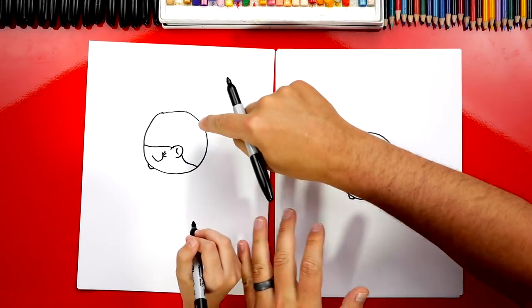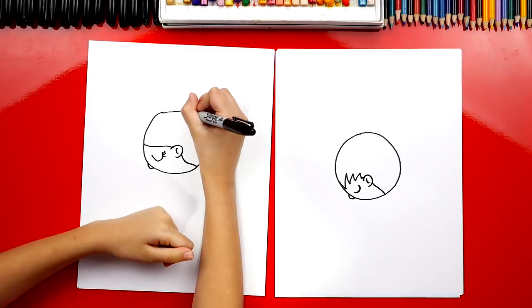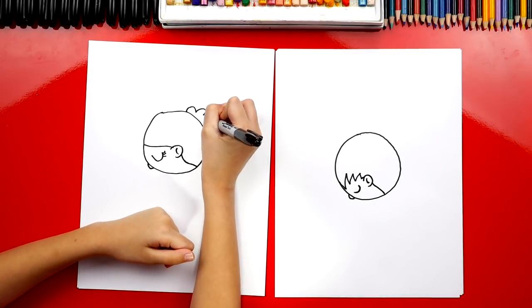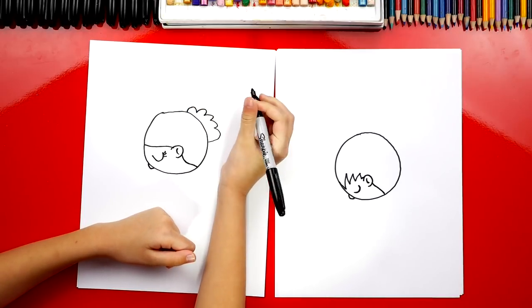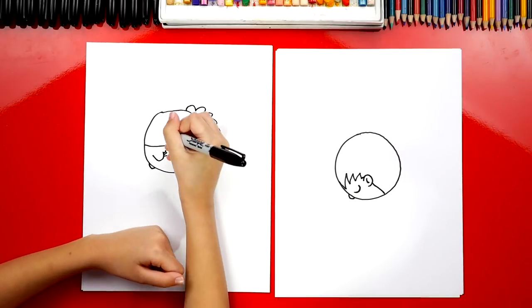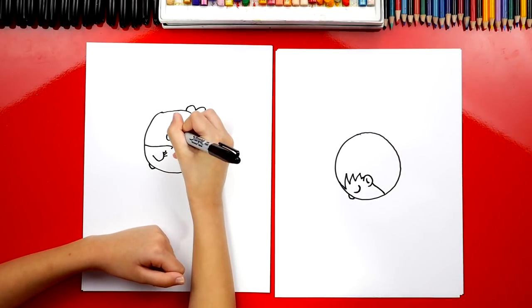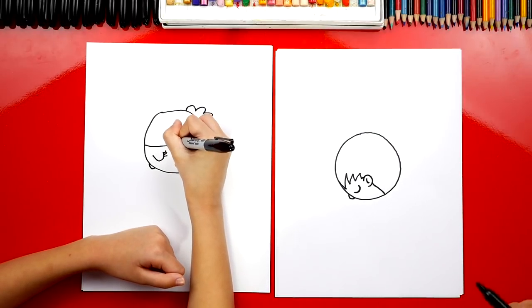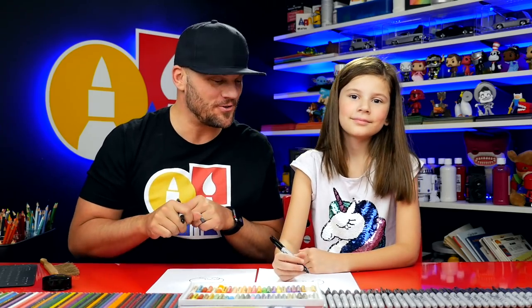Now up here, you could also draw a bumpy line. Maybe her hair is in a ponytail or a bun. Oh, cute. That's awesome. You could also add a little flower in her hair too. Perfect. And you guys at home could also add your own details to your drawing.